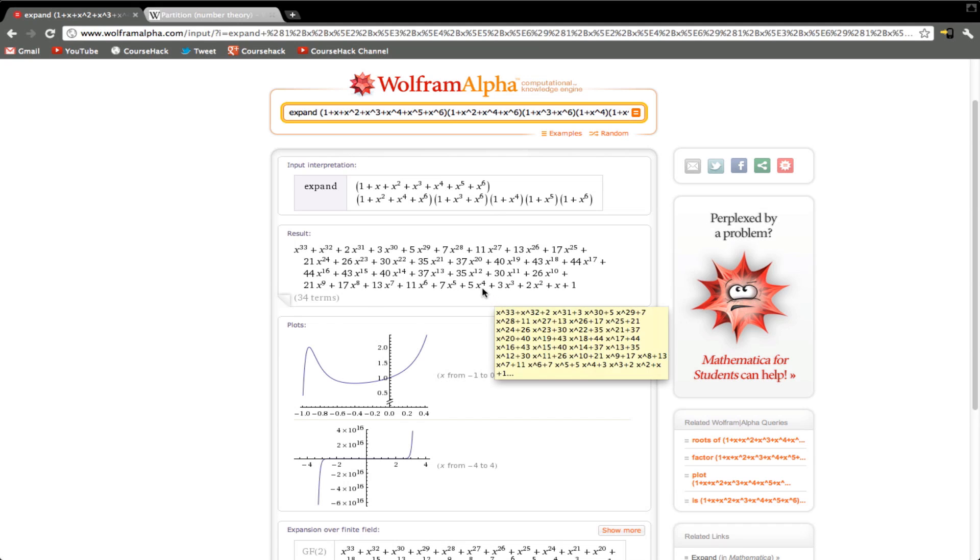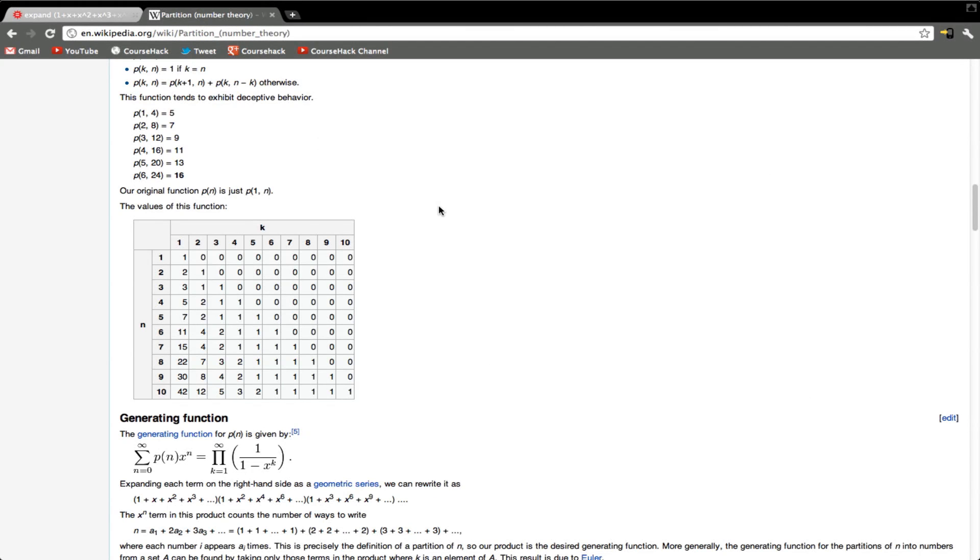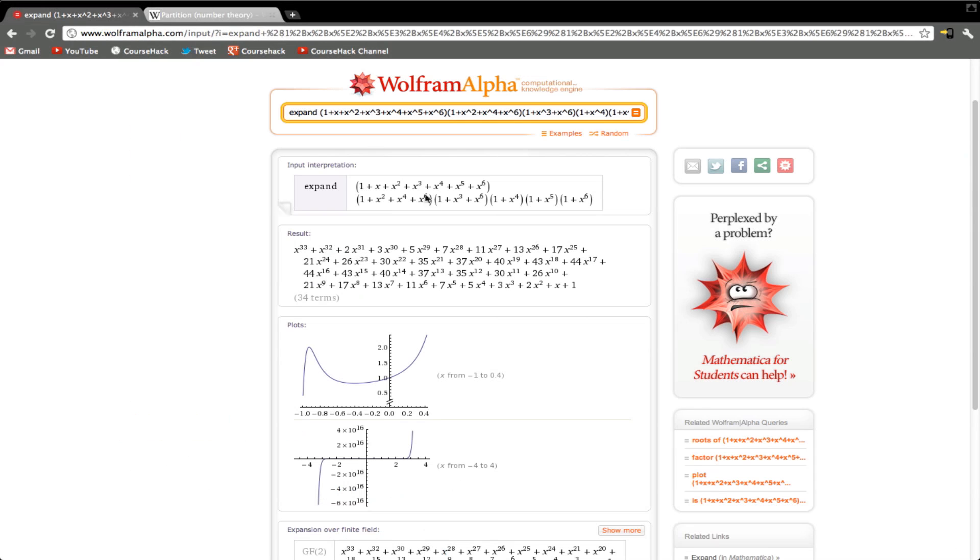If we want the number of partitions for the number 4, you just look at the coefficient for x to the 4th, and that's 5. And if you go to Wikipedia and you go down the table, the number of partitions for 6 is 11, the number of partitions for 4 is 5. So all these numbers up to 6 will be the same in here.